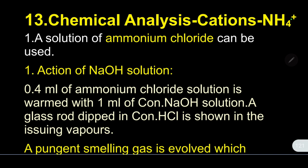The test for the cation ammonium plus will use ammonium chloride, an inorganic compound. Normally, it dissolves in water and we keep the solution ready for the test.